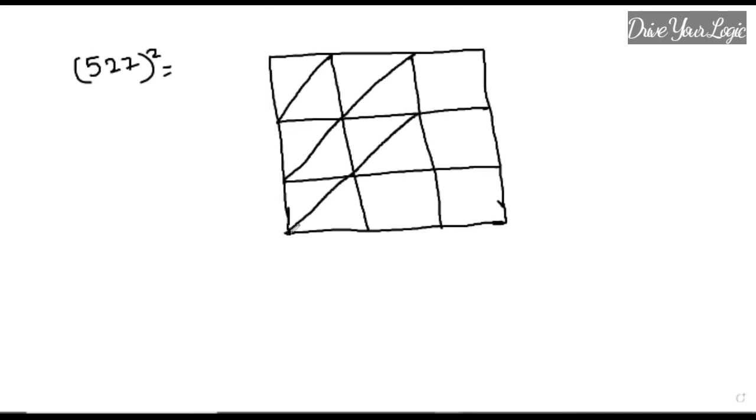Then you can make a cross this way. Be careful while doing the diagonals. If you're using your copy, use your scale and pencil, don't do freehand drawing like me so you can make your work dirty. Here I will write down 5, 2, 7 and here it is 5, 2, 7.